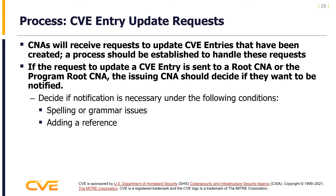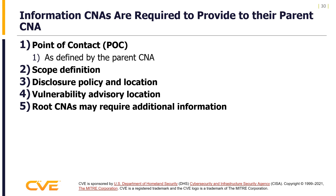CNAs will often receive requests to update CVE entries that have already been created, so a process should be established to handle these requests. If an update request is sent to the root CNA or program root CNA, the issuing CNA should decide if they want to be notified of any updates — considering whether updates are insignificant (like spelling or grammar) or more significant (like adding a reference). CNAs are required to provide the following to their parent CNA before participating: point of contact, scope definition, disclosure policy and location, vulnerability advisory locations, and any additional information required by the root CNA.